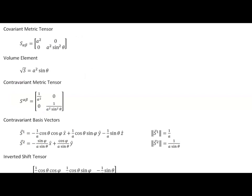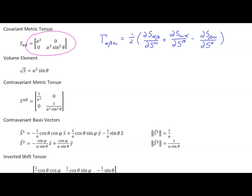Let's move on now to the spherical surface. Here's our formula for our Christoffel symbol of the first kind, so we first have to look at the partial derivatives. We look at our covariant metric tensor and find all of the possible partial derivatives. Only one element is variable and dependent only upon theta. So the partial derivative of S22 with respect to S1 is the only non-zero partial derivative, and that value is equal to 2a squared sine theta cosine theta.